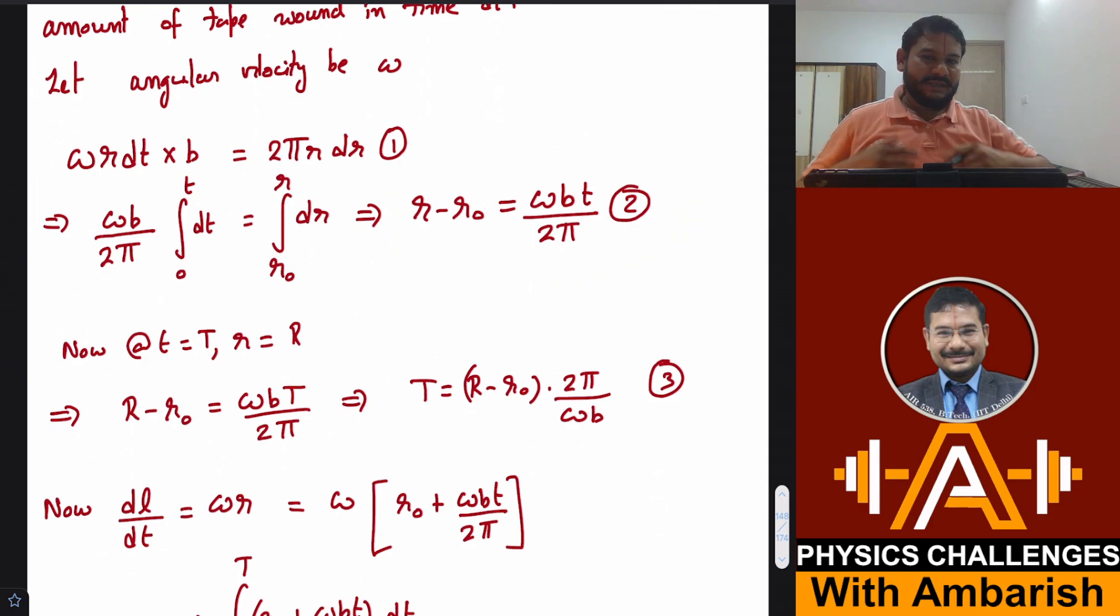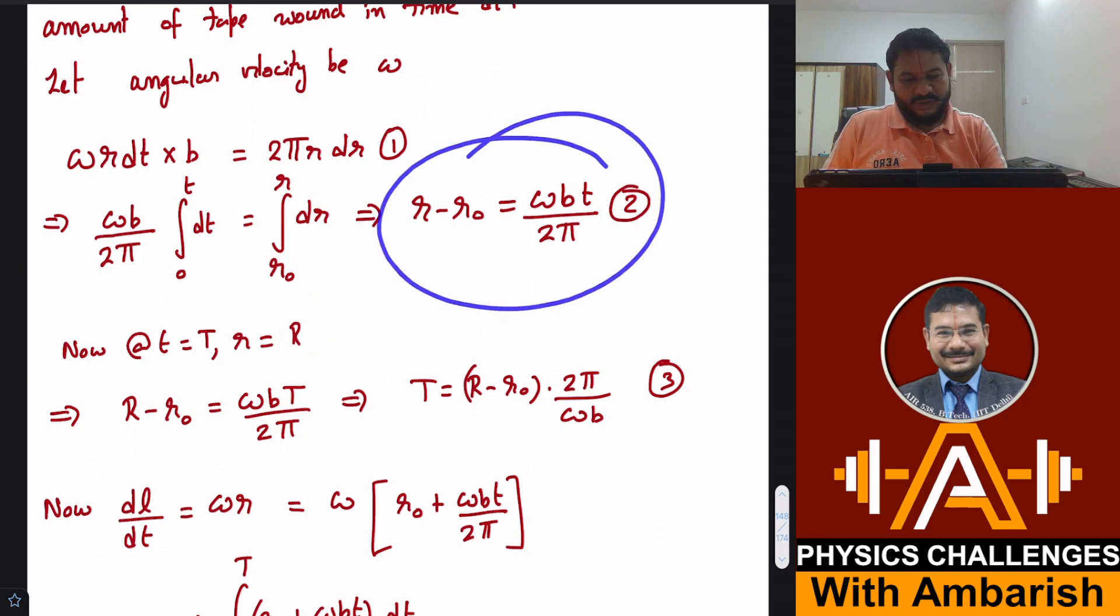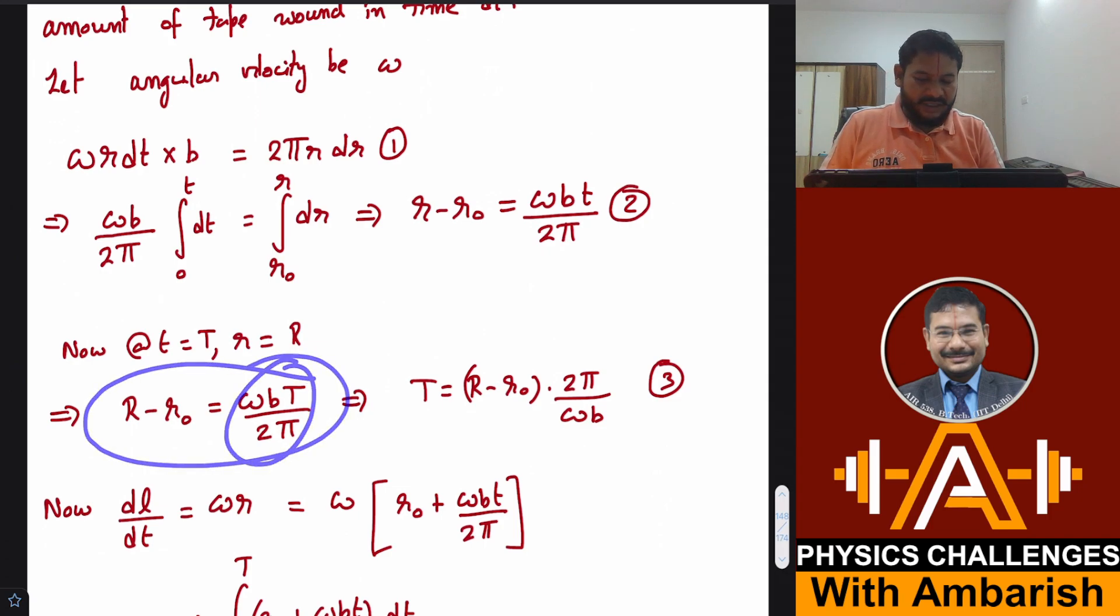Also I know that when the complete time is over, at time t equals capital T, that was 165 seconds, the complete spool is wound and the outer radius becomes capital R. In the same equation I can substitute capital R for small r and capital T for small t, and that gives me R minus r0 equals omega b capital T upon 2π, or I can say T is R minus r0 into 2π upon omega b.